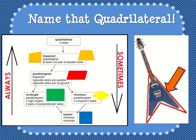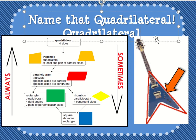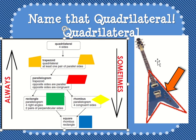Moving on to the next one — name that quadrilateral. We're looking at this shape here. All the sides are straight. It has four sides. Parallel sides? I don't see any parallel sides. Hopefully you said this is just a quadrilateral. It is none of those other things — it is a quadrilateral and nothing else because it doesn't have any parallel sides.